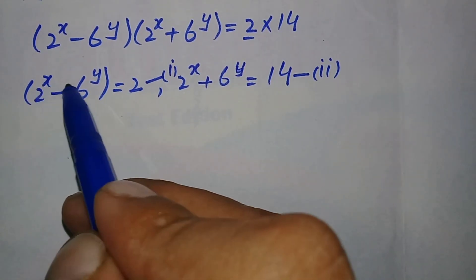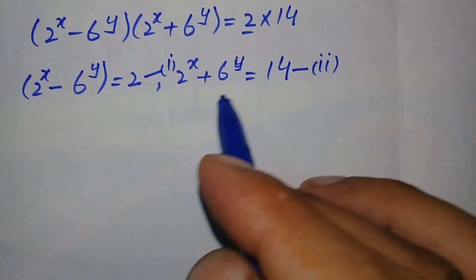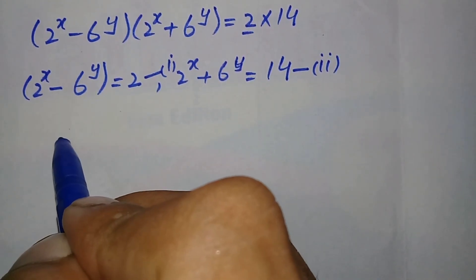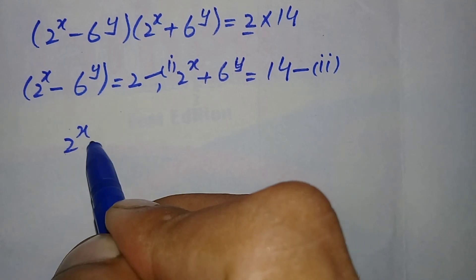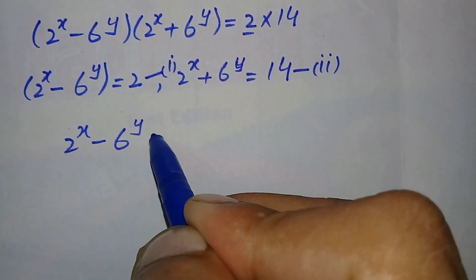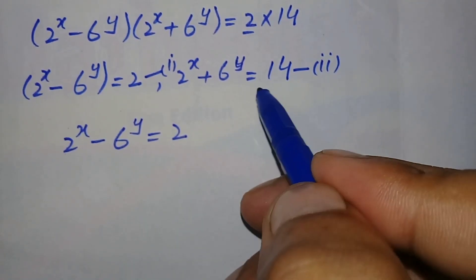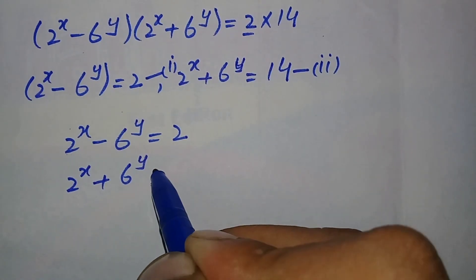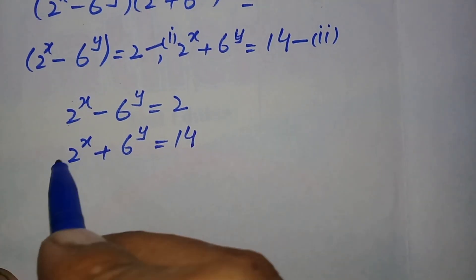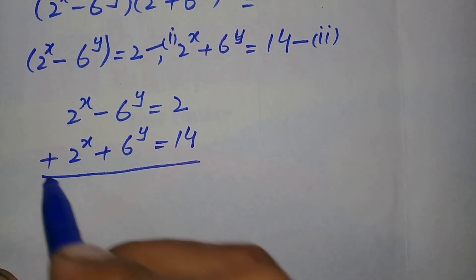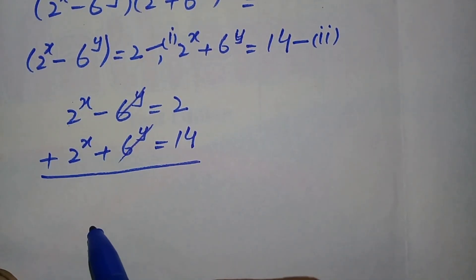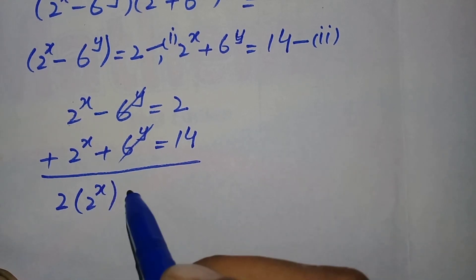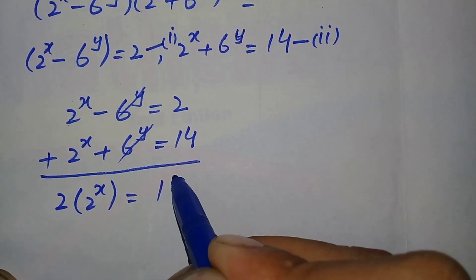Since we need to find the value of x and y, we will add these two equations to find x. Adding equation 1 — (2^x minus 6^y equals 2) — and equation 2 — (2^x plus 6^y equals 14) — the 6^y terms cancel each other. This gives 2 times 2 raised to power x equals 2 plus 14, which equals 16.